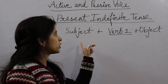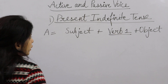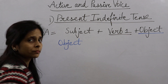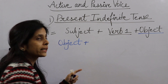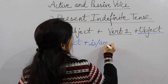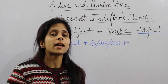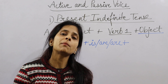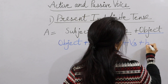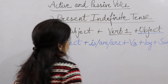In present indefinite tense, the active voice is: Subject + Verb first form + Object. Now if we make passive voice, the object comes first. Remember, in present indefinite tense passive voice, it becomes: Object + Is/Am/Are + Verb third form. In passive voice, any tense always uses the verb third form. Then By + Subject comes at the end.